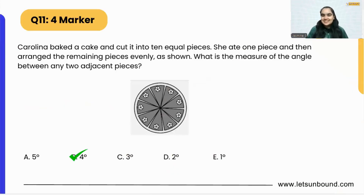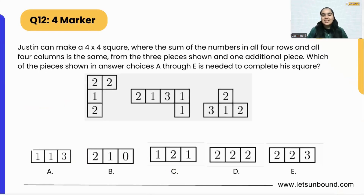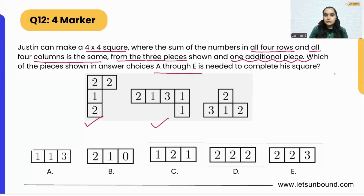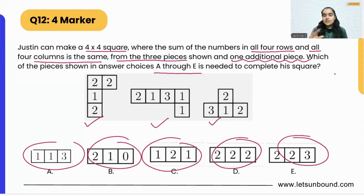Let's get started with today's question. Justin can make a four by four square where the sum of the numbers in all four rows and all four columns is the same, using three given pieces and one additional piece. Which piece shown in answer choices A through E is needed to complete his square? He is going to use those three pieces plus one of the five options.